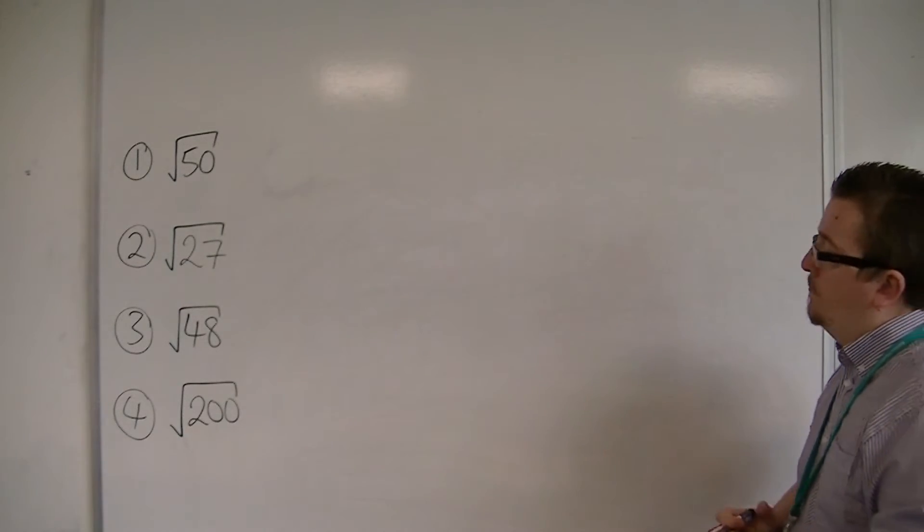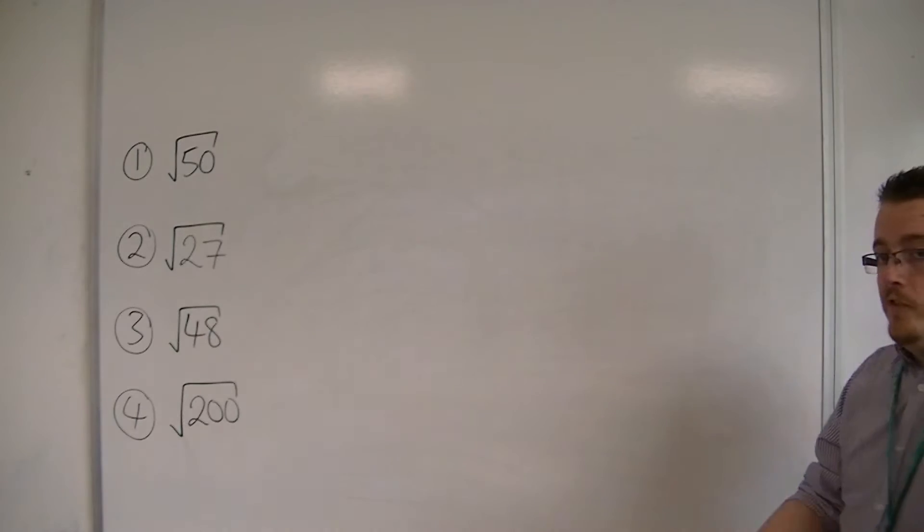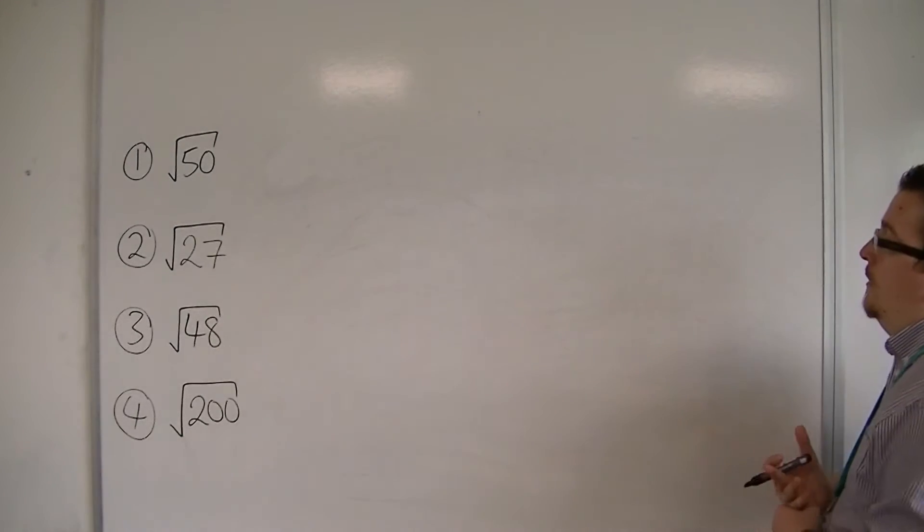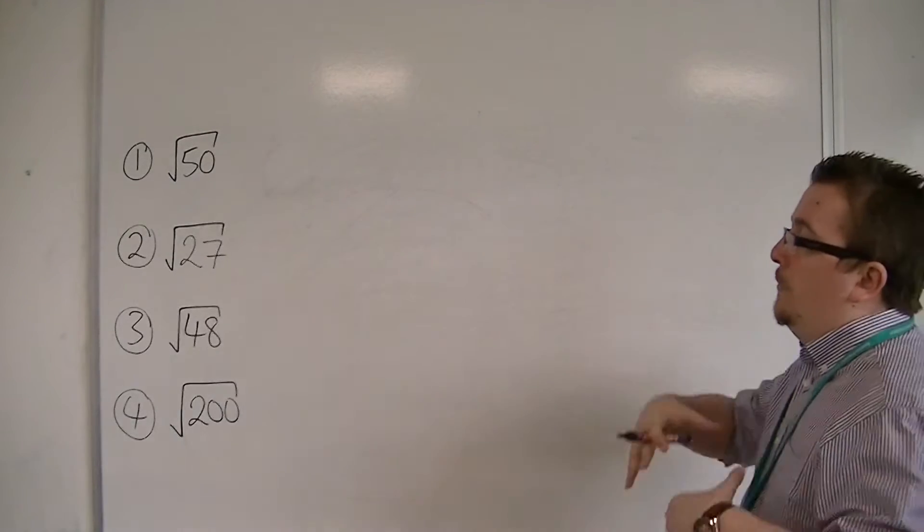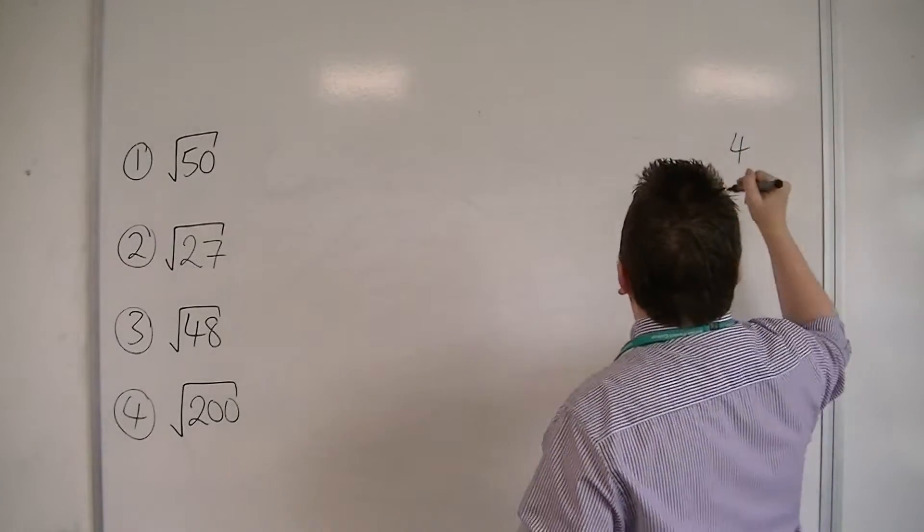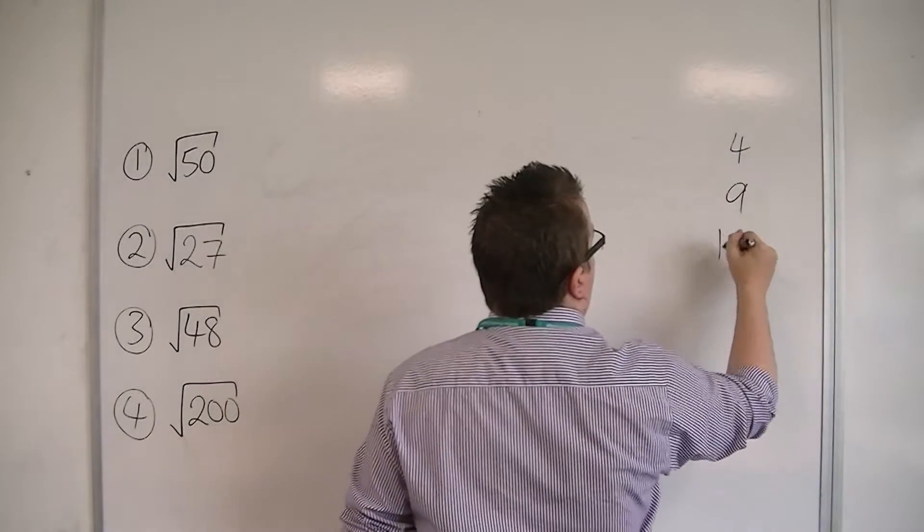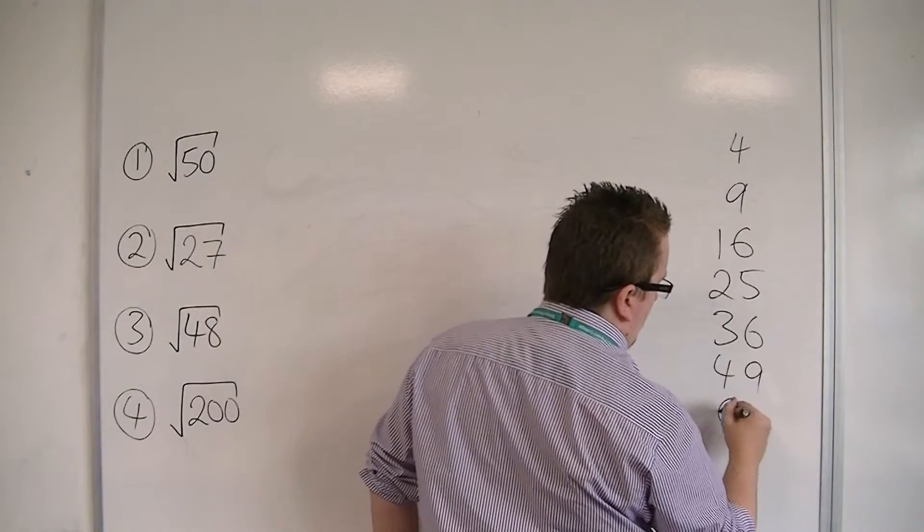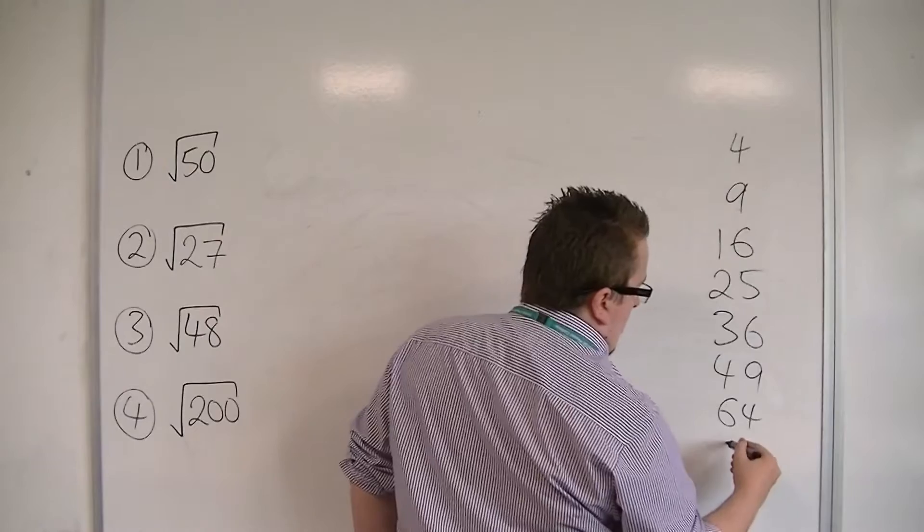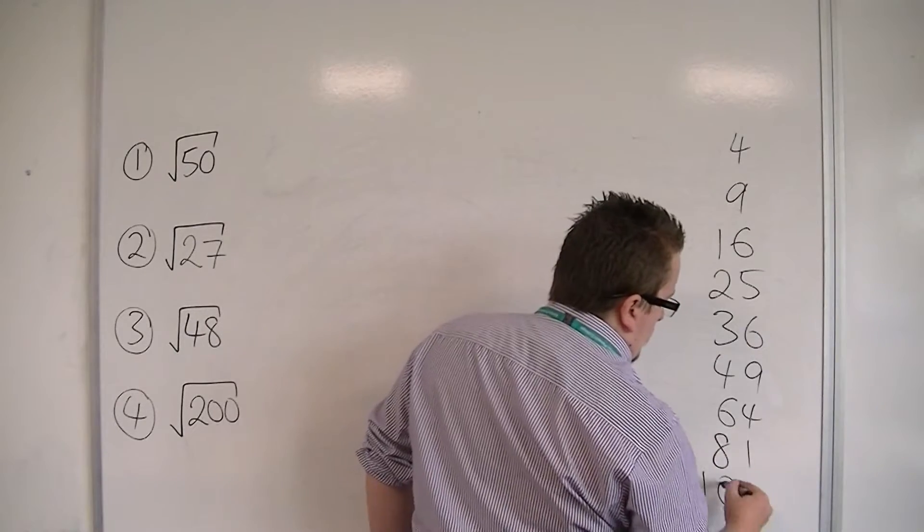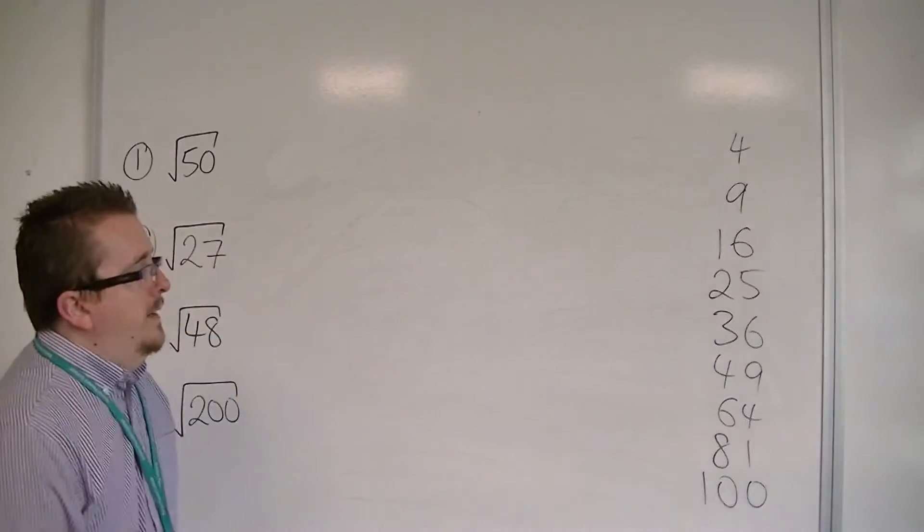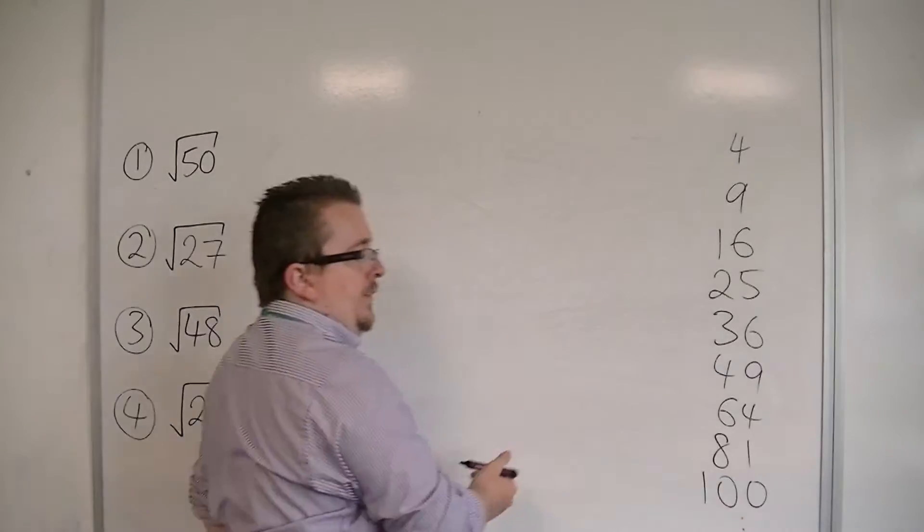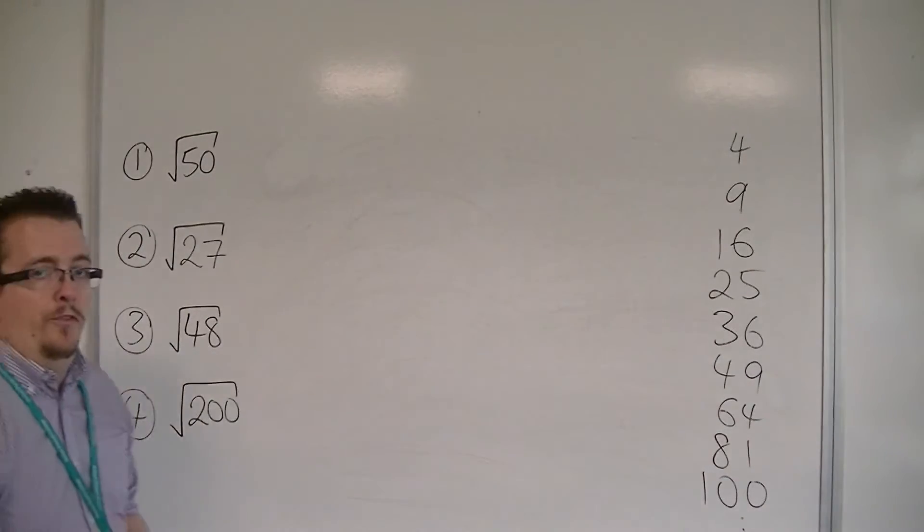So we've got 1 squared, that one we don't really need here. So we've got 2 squared is 4, 3 squared is 9, 4 squared is 16, 5 squared is 25, then 36, 49, 64, then 81, and then 100. And obviously the list keeps going, but they will do.